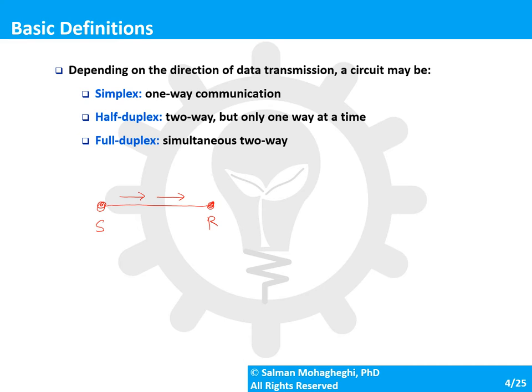The half-duplex circuit is a two-way circuit, so you can transmit data in both directions; however, only one way at a time. If the receiver wishes to send something to the sender, it would have to wait for the sender's transmission to end. A good example of half-duplex circuits is a walkie-talkie — two people can communicate, but only one at a time.